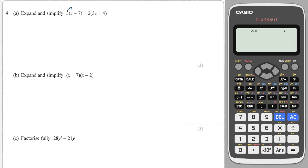First, we're going to multiply the coefficient of the bracket by the contents of the bracket. So I'm going to do 3 times c, which is 3c, and 3 times minus 7, which is minus 21.